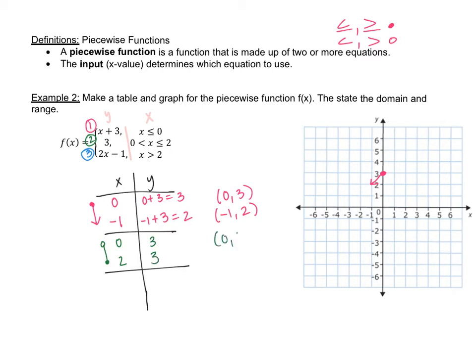So we have coordinates (0, 3) and (2, 3). At zero three I draw an open circle. At two three I draw a solid dot. Then I connect the lines. So we now have two equations on our graph.